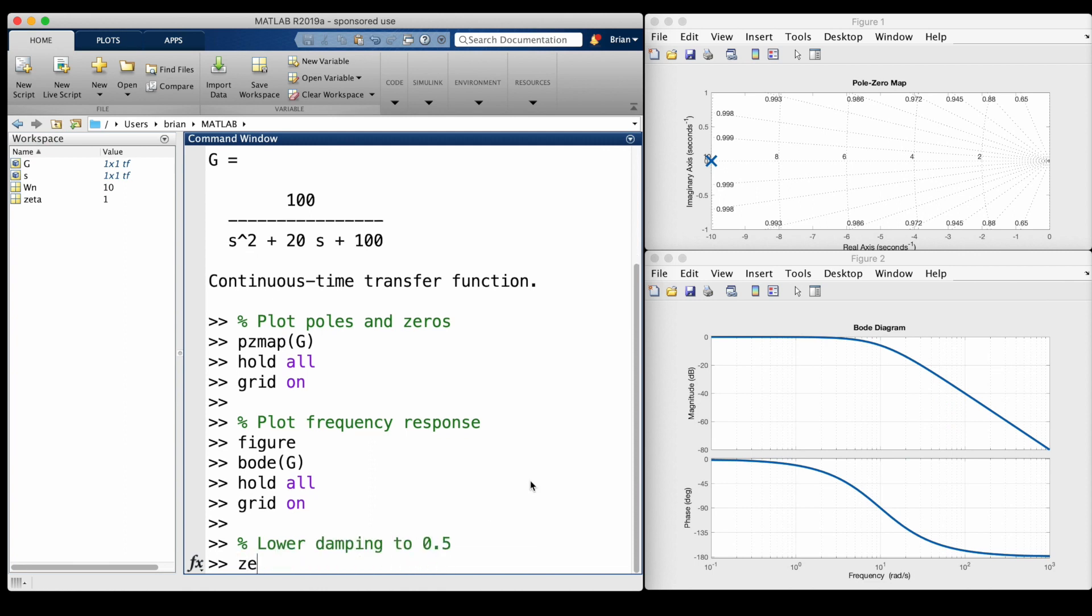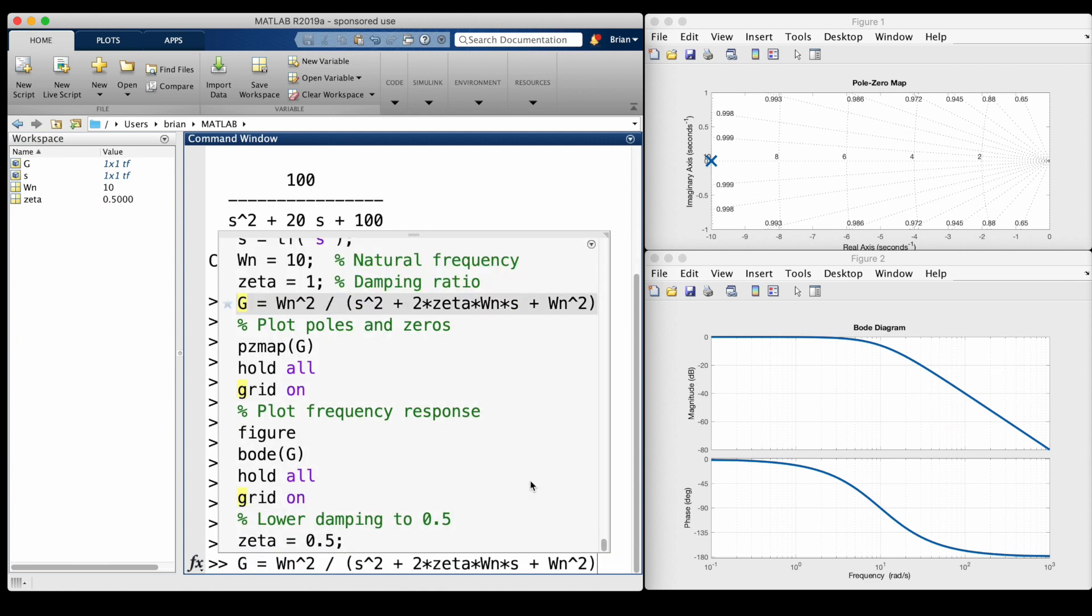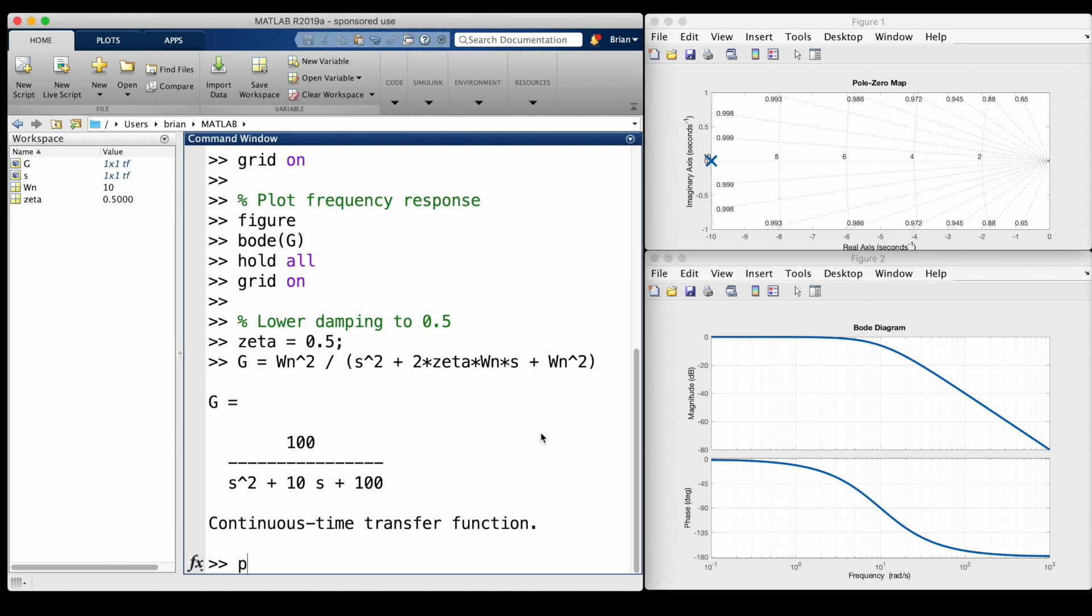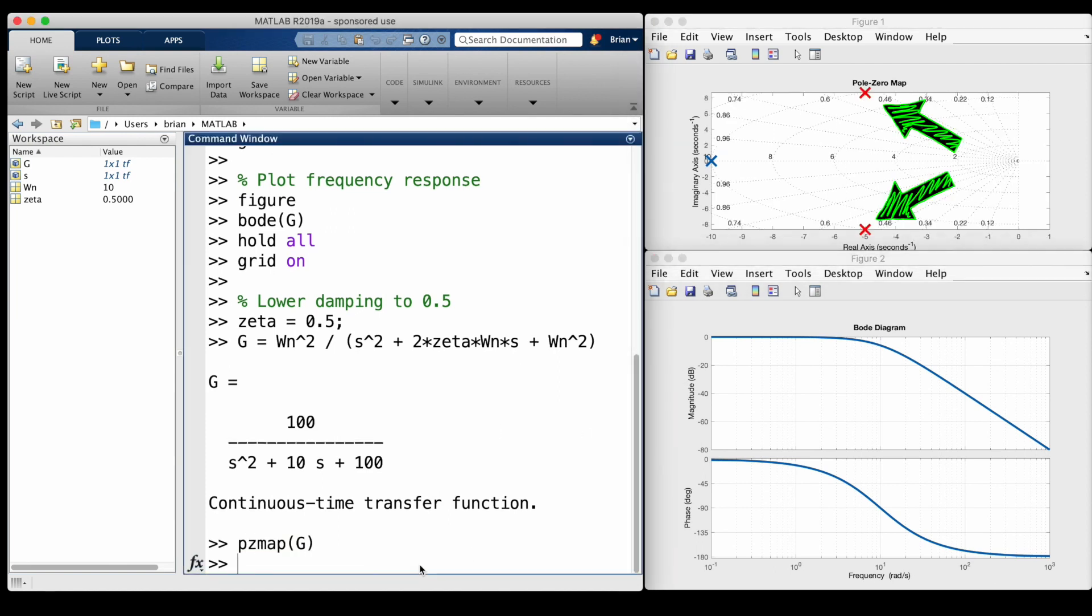Now, let's lower the damping ratio from 1 to 0.5. And we can see that the poles move closer to the imaginary axis along the constant damping line, which means that there's also an imaginary component to them.